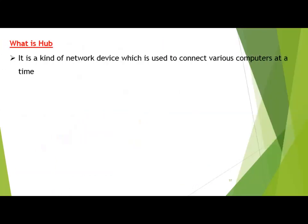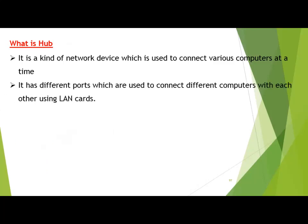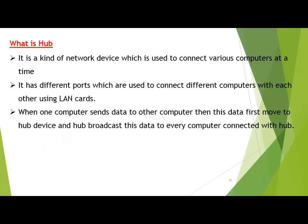What is a hub? It is a kind of network device used to connect various computers at a time. When you want to connect two or more computers with each other, you need a hub. Hub is a device which establishes a network of a number of computers. It has different ports used to connect different computers using a LAN card. Hub can have different ports like 8 ports or 16 ports. Hub means center point — when one computer sends data to another, the data first moves to the hub and the hub broadcasts this data to every connected computer.